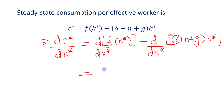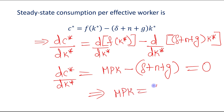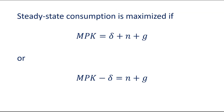Taking the derivative gives us the marginal product of capital on one side and delta plus n plus g on the other. To maximize, we set this derivative equal to zero. This gives us: marginal product of capital equals delta plus n plus g, or equivalently, marginal product of capital minus delta equals n plus g.